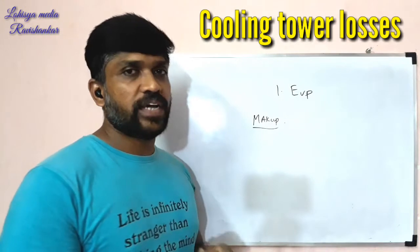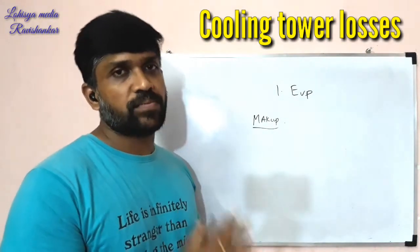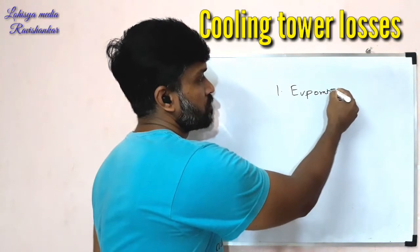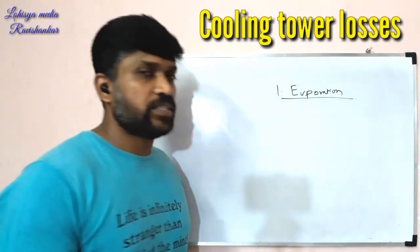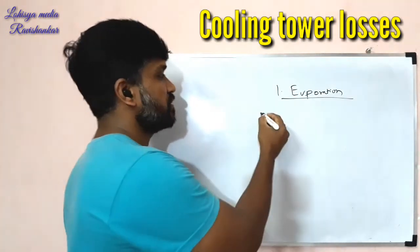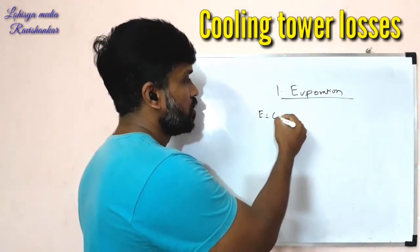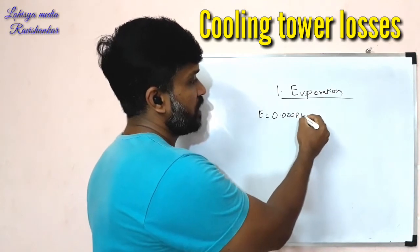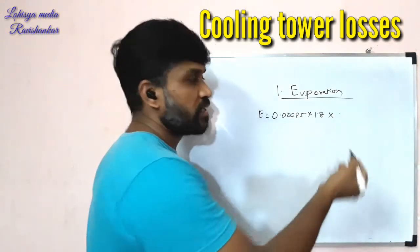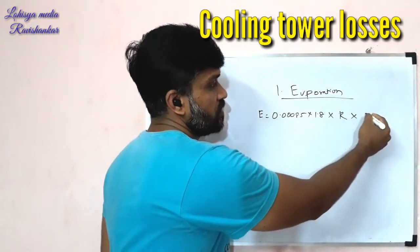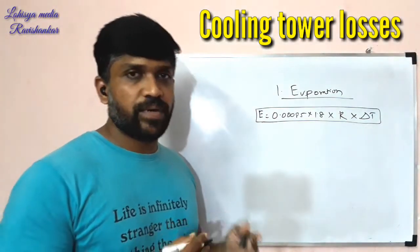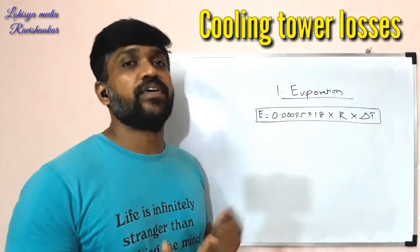First, we will calculate the evaporation process. We need to take the evaporation. The formula is: Evaporation = 0.00085 × 1.8 × hot water flow rate × delta T.